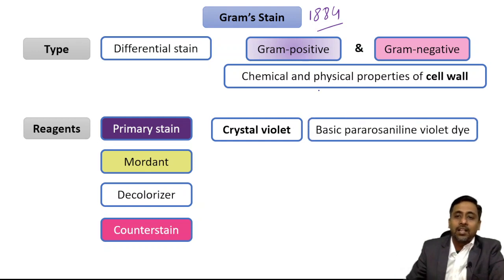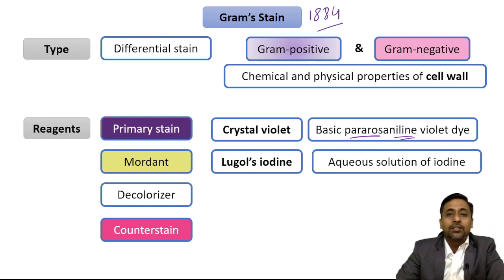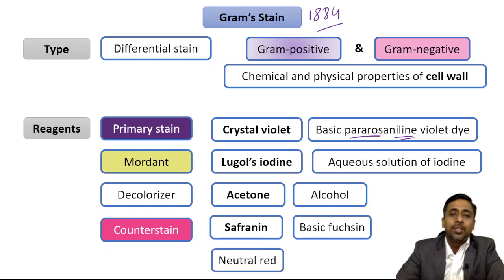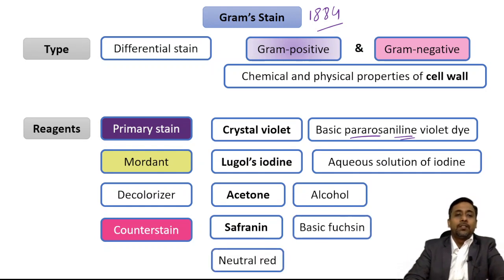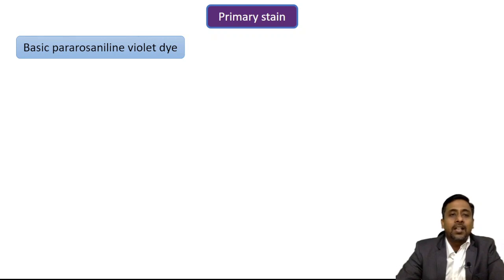The mordant is Lugol's iodine, also known as Gram's iodine, and it is an aqueous solution of iodine. The decolorizer can be acetone or alcohol, and the counter stain can be safranin, basic fuchsin, or neutral red. The primary stain is a basic para-rosaniline violet dye, and the most common dye used as a primary stain is crystal violet.